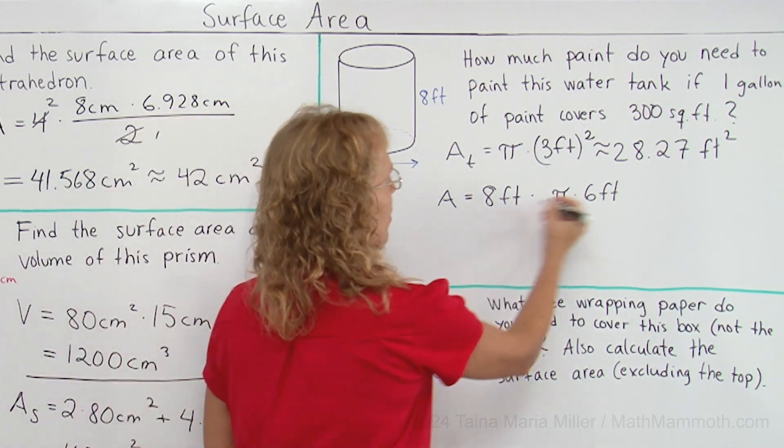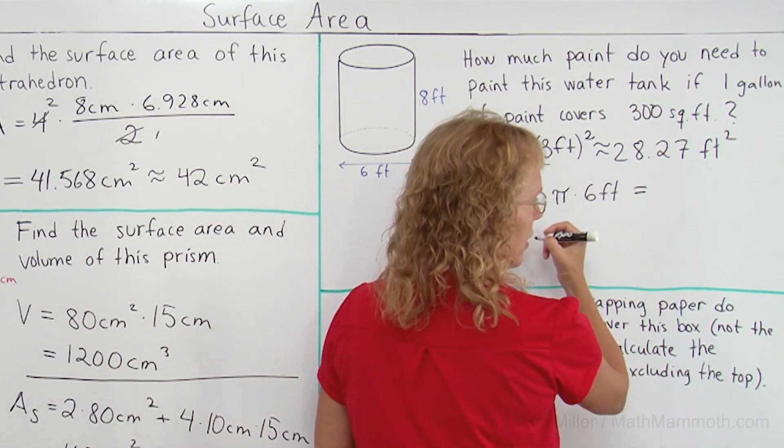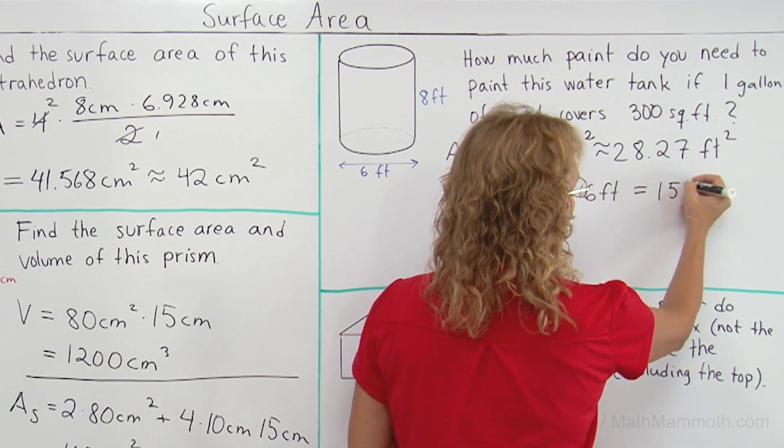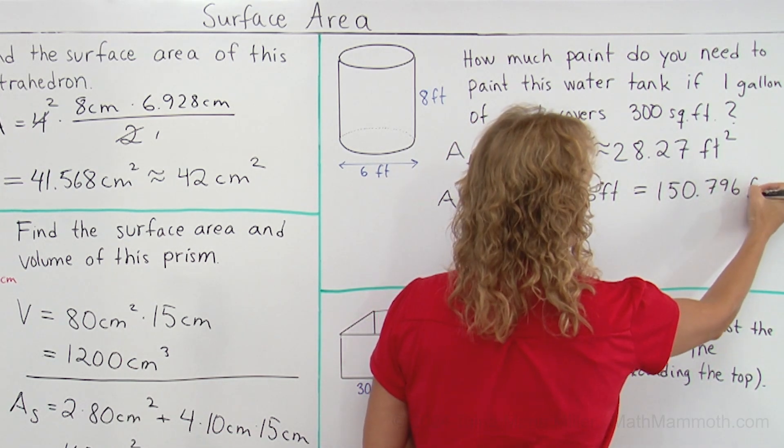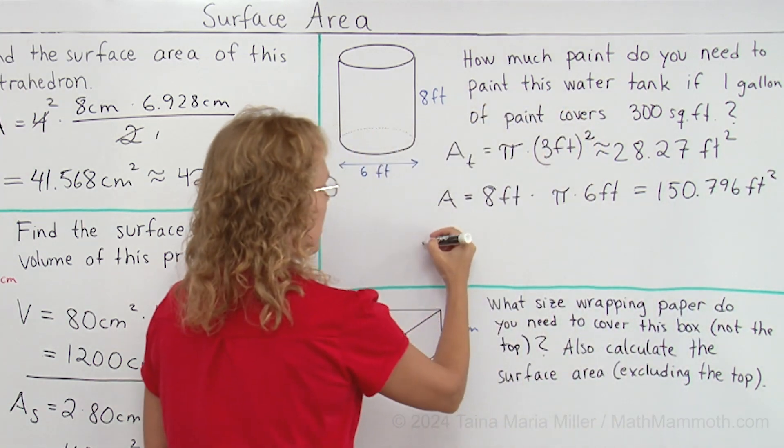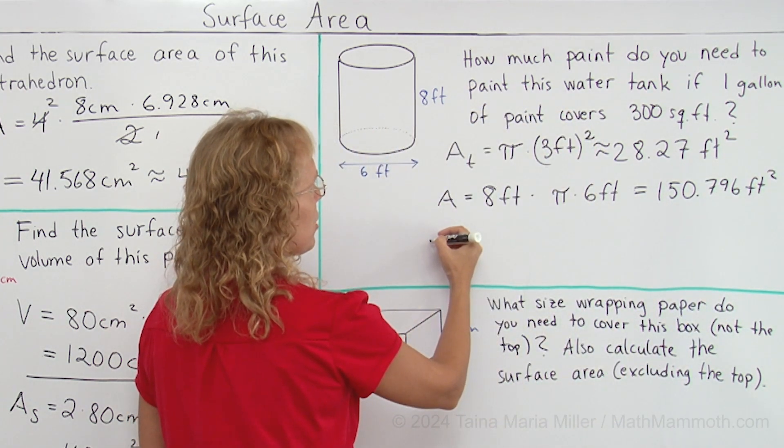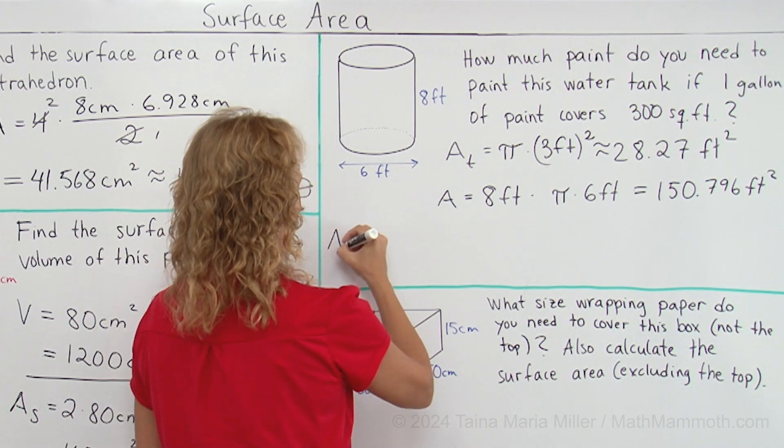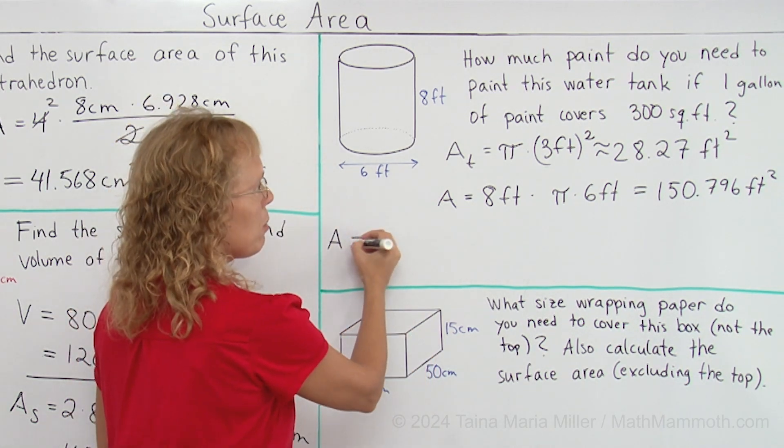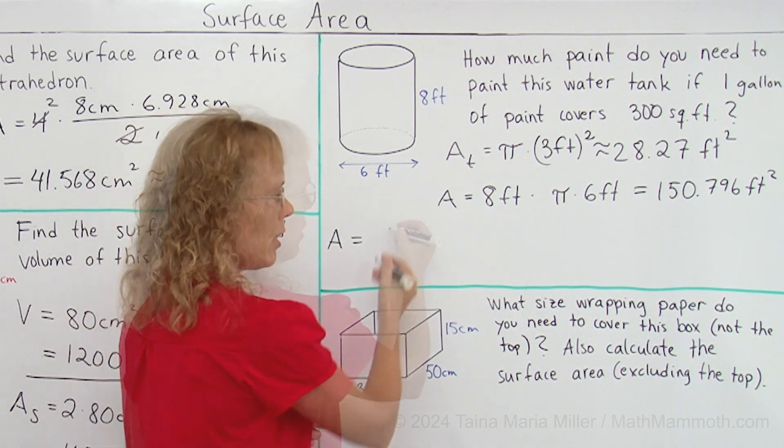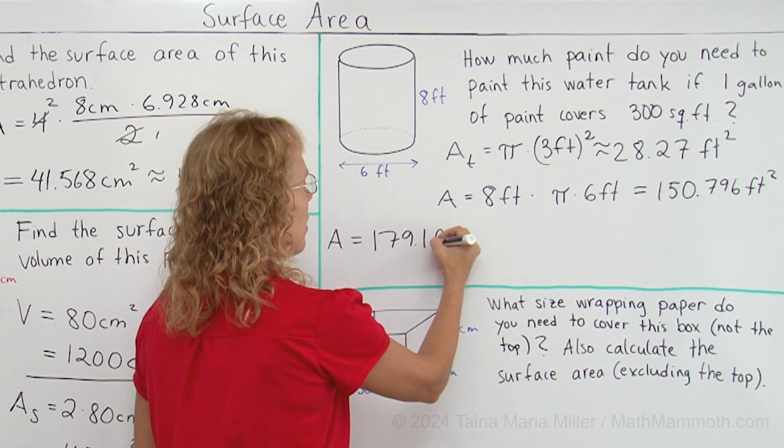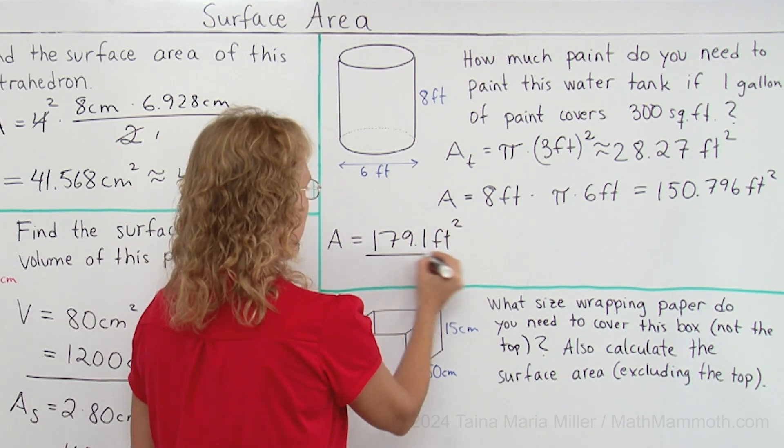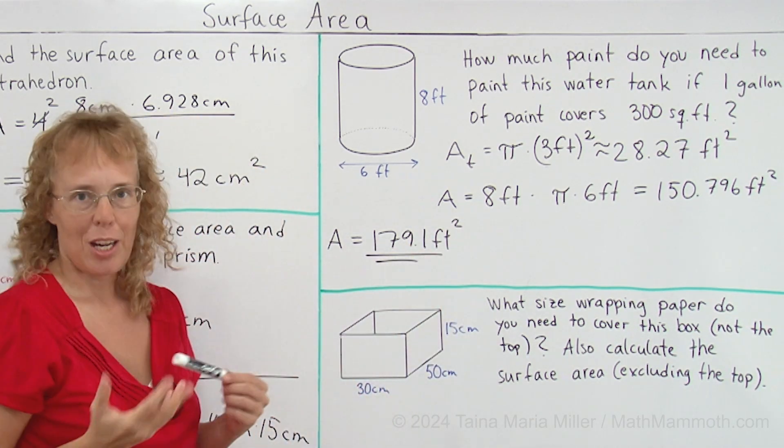So we have here eight times six times pi, forty-eight times pi and that is 150.796 square feet. And lastly we add those two together, area to be painted would be those two added together and we get 179.1 square feet.